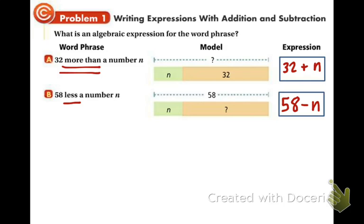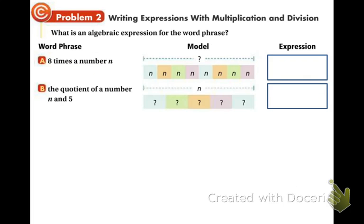Alright, we're going to go on to example 2 now. We're going to do the same thing, except this time we're using multiplication and division. So in part A, we have 8 times a number N. What does times mean? Well, that is multiplication. So we're going to have 8 times N.